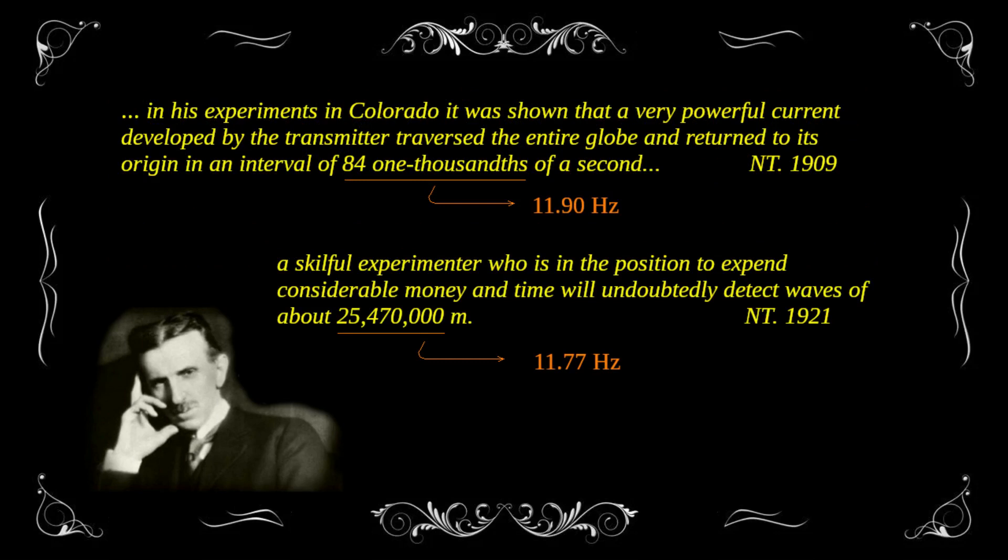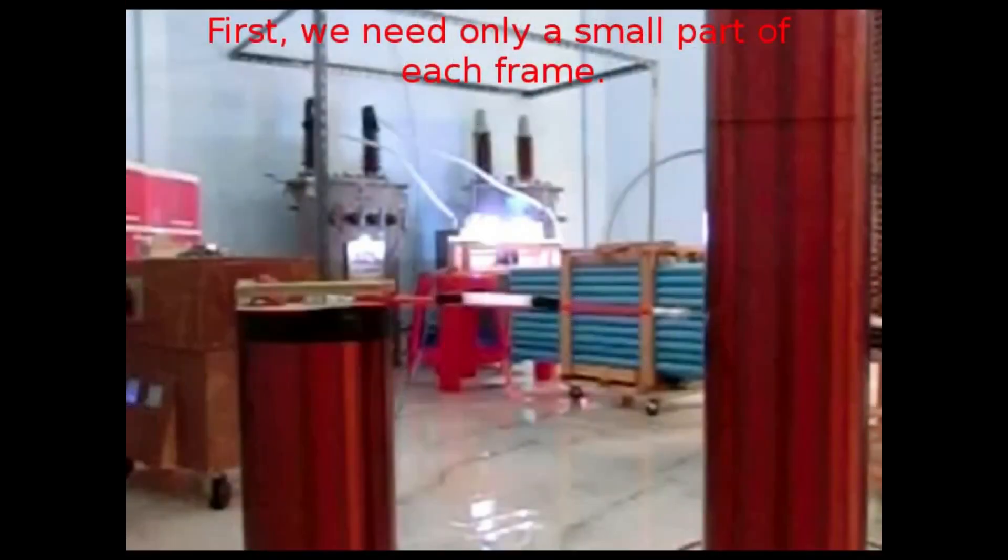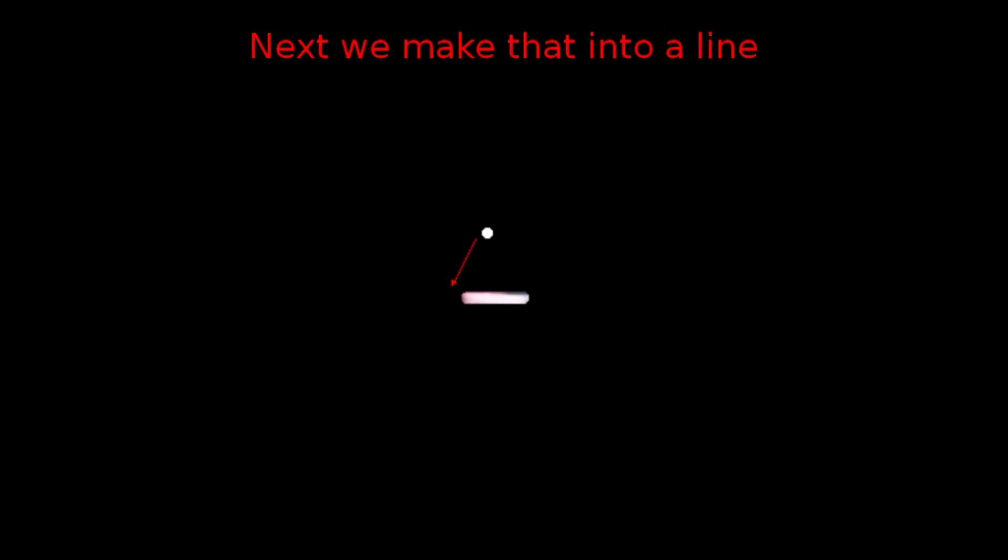The resonance frequency of the Earth is about 11.77 Hz according to Tesla. In our experiments, we have noticed a significant performance increase when the spark gap is triggered at this frequency or a multiple thereof. We have also been able to detect the echo of a pulse after 84.9 ms, which matches the period of this frequency.